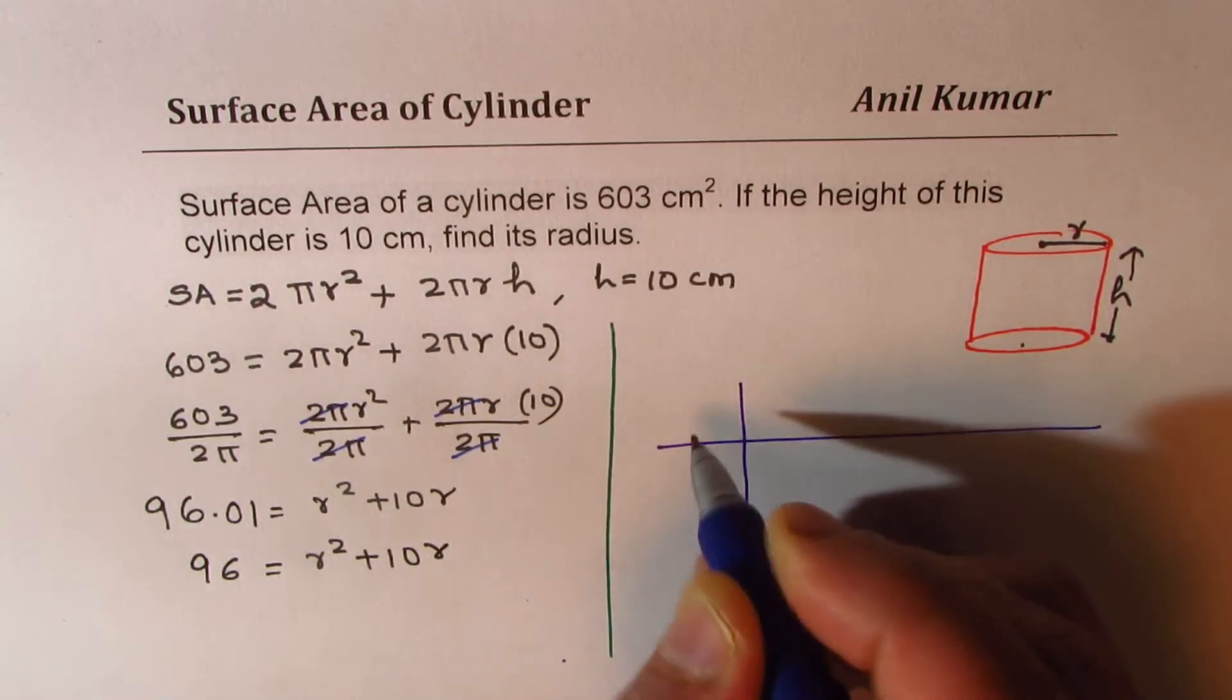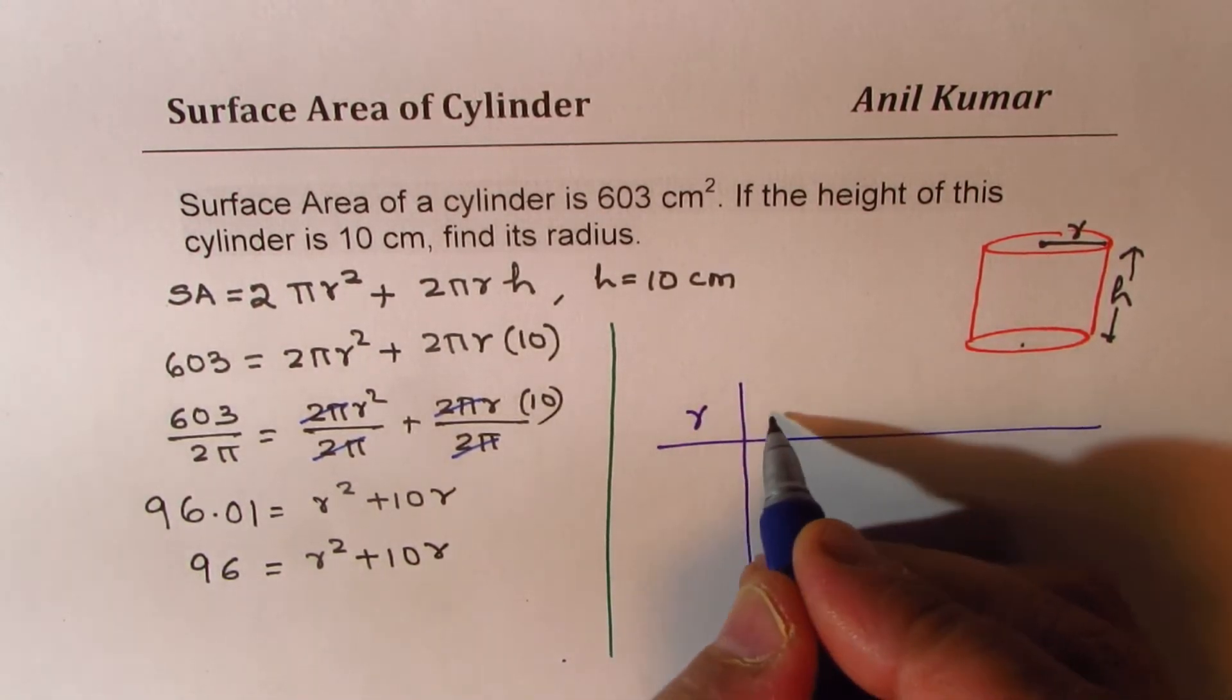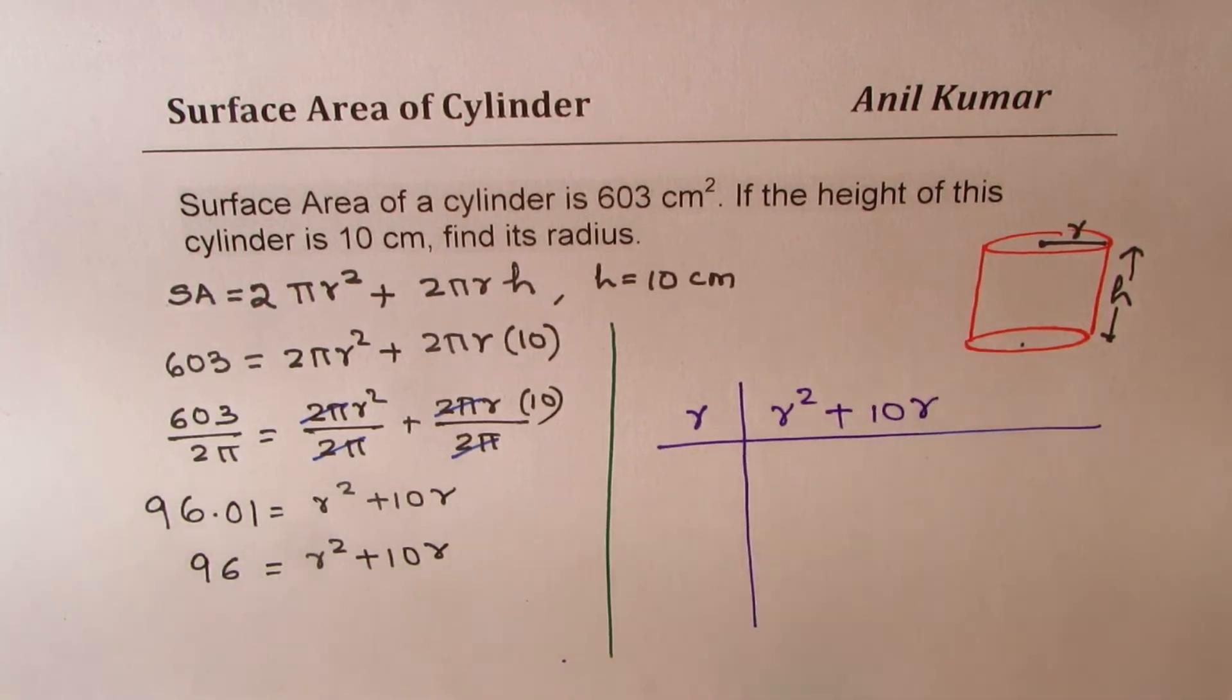So I'll just make a table here and then substitute values for r and calculate. So let us say if I write the value of r and then find what is r² plus 10r for different values of r, let's see what do we get.